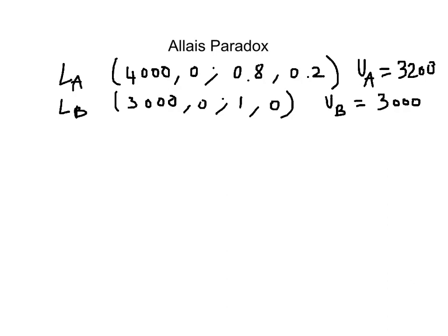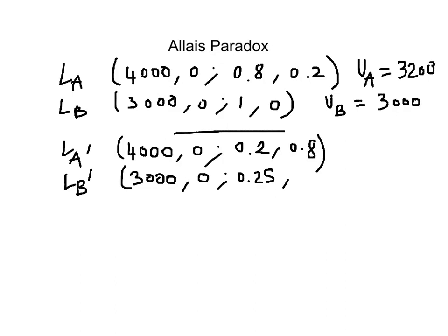Now second example, choosing now between Lotteries A' and B'. Lottery A' gives you $4,000 with a 20% probability and nothing with an 80% probability. Lottery B' gives you $3,000 with a 25% certainty and $0 with a 75% certainty.